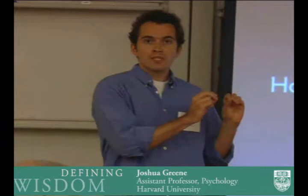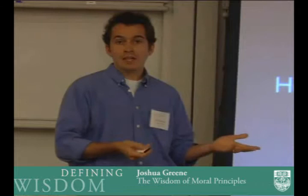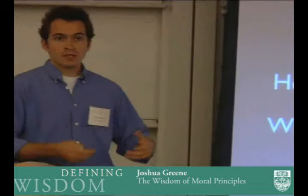Secondly, how do these intuitive moral judgments ultimately give rise to the sorts of explicit principles used by philosophers like Rawls and Kant, and policymakers like Bush? And then finally, once we have an explicit, articulable version of the moral principle, what role does that play in our subsequent judgments of particular cases?